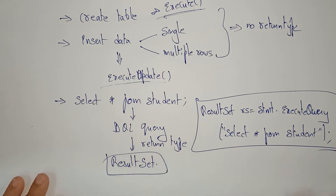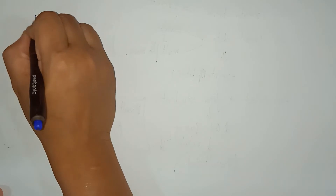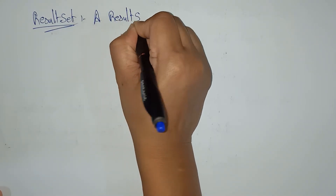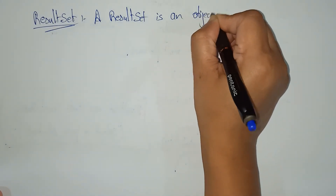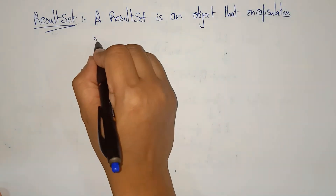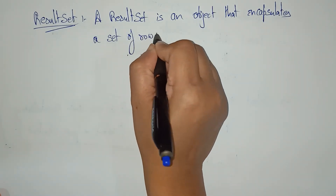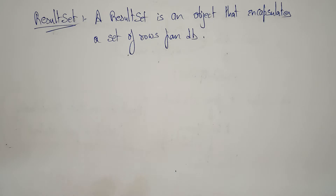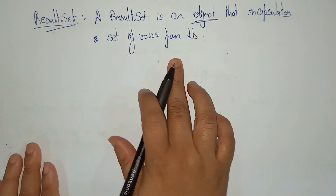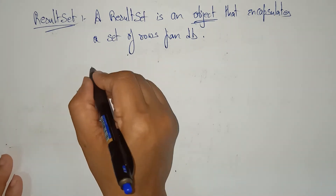First of all, what is ResultSet? ResultSet is used for retrieving data from the database. It is an object that encapsulates a set of rows from the database. It is not trying to show information on the screen — it is just encapsulating the rows.